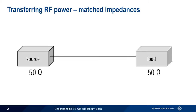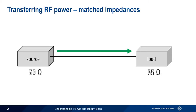In this case, all of the RF power from the source is absorbed by the load, and in most cases this is exactly what we want. The standard impedance in the RF world is usually 50 ohms, but you'll also come across systems that use 75 ohms as a standard impedance — for example, cable television systems.